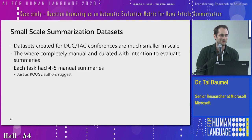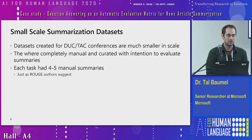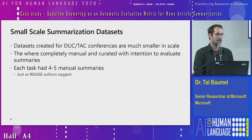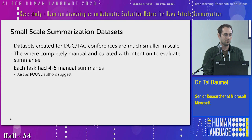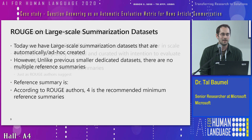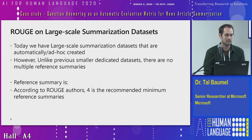Another set of classic datasets for automatic summarization are DUC and TAC. Unlike CNN/DailyMail, these were prepared specifically for automatic summarization, which means they do have many manual summaries for evaluation, and ROUGE does perform well on those datasets. We'll come back to them. To reiterate: ROUGE is not ideal for large-scale datasets because there is only a single reference.